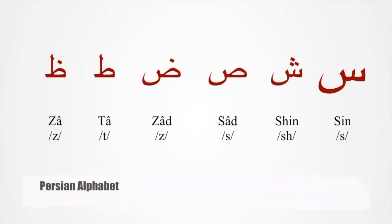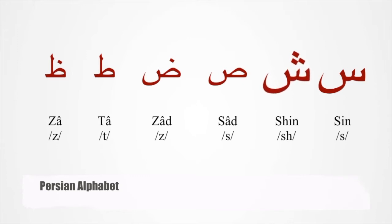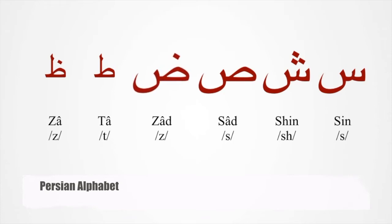Persian alphabet. Sin, Shin, Sad, Zad, Ta, Za.